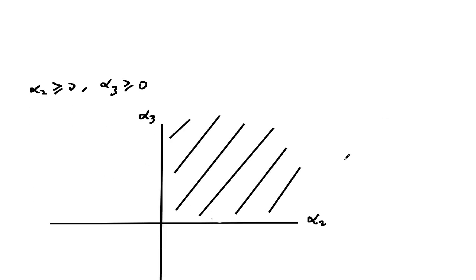So we're maximizing L sub d on the positive orthant where alpha2 is greater than or equal to 0 and alpha3 is greater than or equal to 0. Here's the positive orthant — it's just this quadrant here. Now let's look for any critical points in the interior of the positive orthant by setting the gradient of L sub d equal to 0.